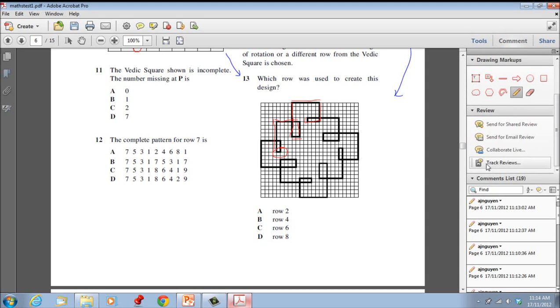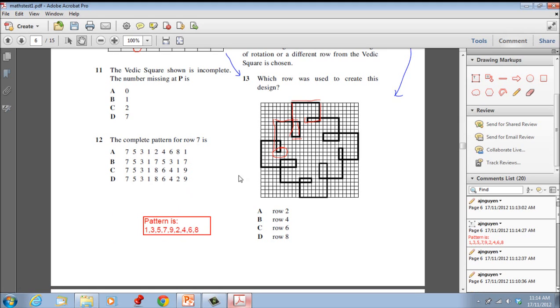Let me write this pattern out for you. Your pattern is 1, 3, 5, 7, 9, 2, 4, 6, 8. Now given that this is the pattern, all we need to do now is find out where this pattern lies on the row.